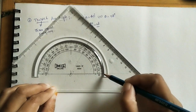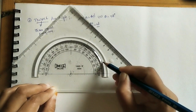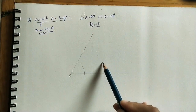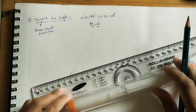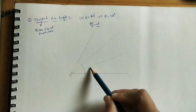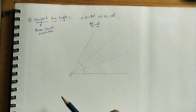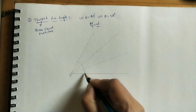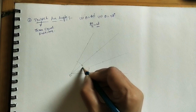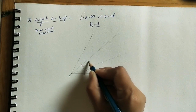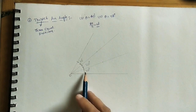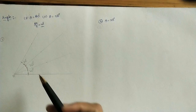Using the protractor, mark 20 degrees from 0 to 20, then from 20 to 40 — we get two intermediate points. Join these two points to the initial point. Now this angle is 20 degrees, this angle is 20 degrees, and this angle is 20 degrees. We have used the protractor to mark these three equal divisions of the 60 degree angle, each part being 20 degrees.